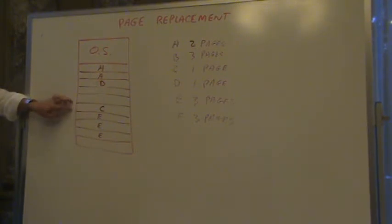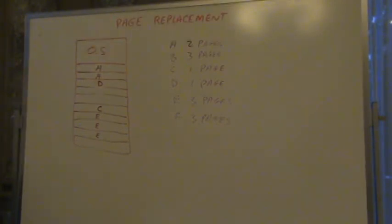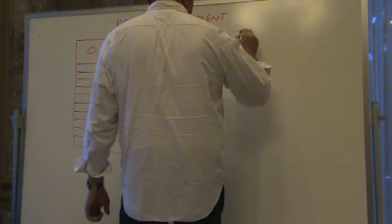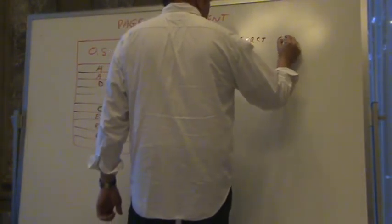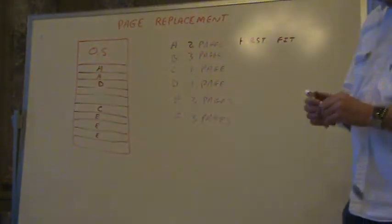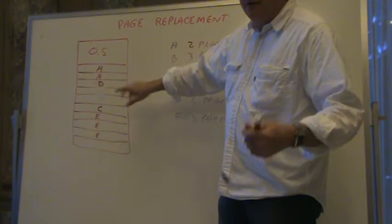A separate thread could come in and relocate it while the process is on the ready queue — not while it's running — and then we'd have room. Some of the choices of where to put them: three of the most common choices would be an algorithm called First Fit. First Fit is — start at the beginning and go down until you find the first spot that could fit it, and throw it in there.